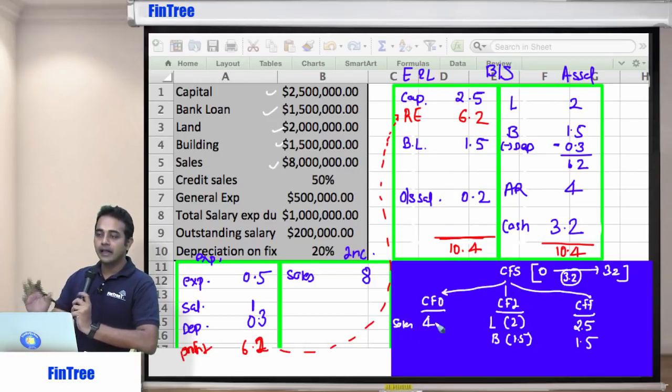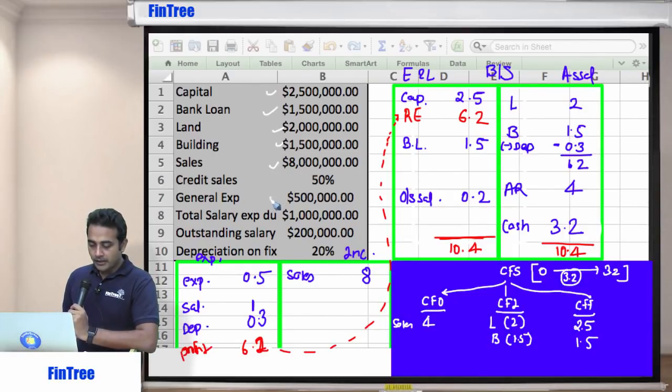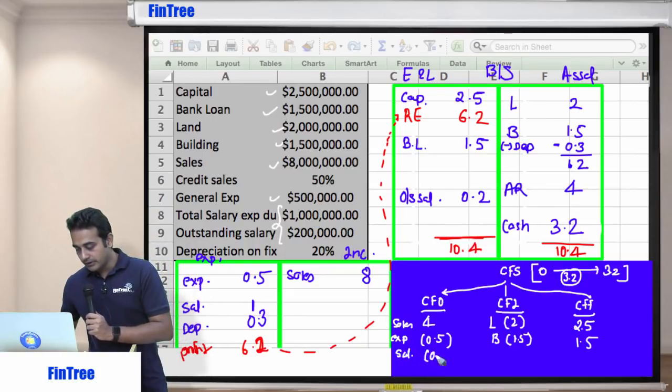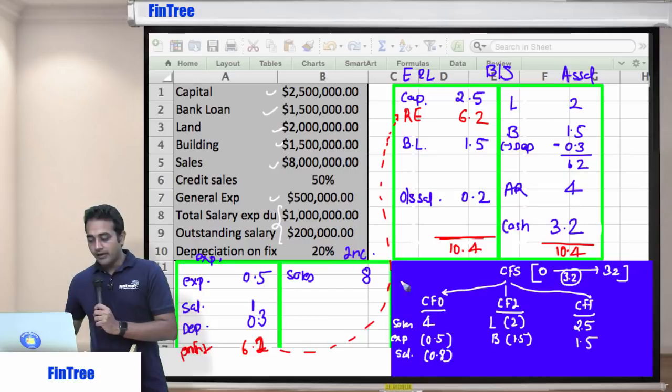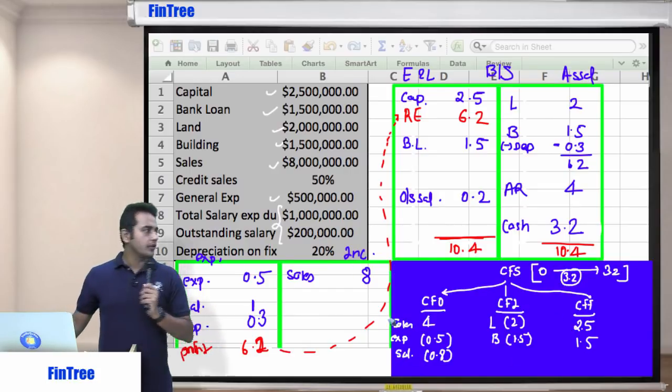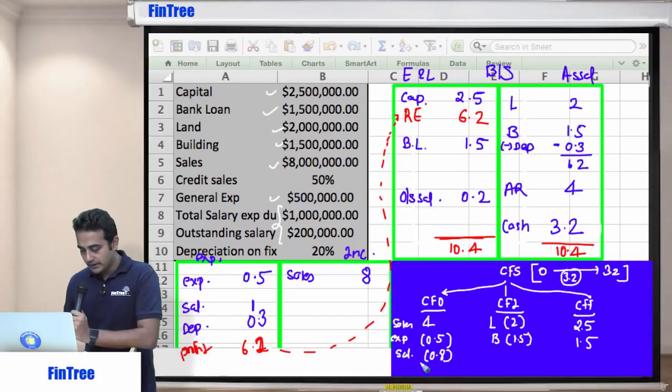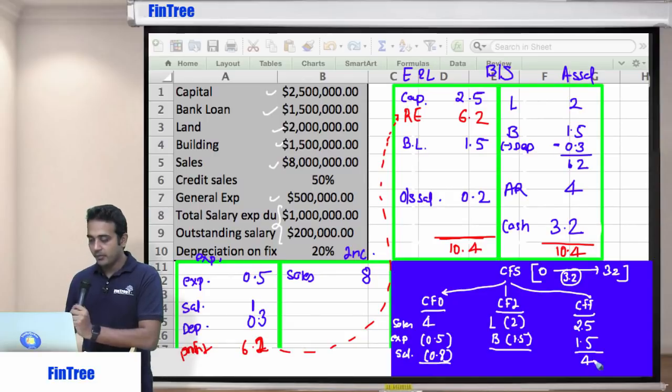Then general expenses 0.5. Where should we write this? It is an operations, but it's a negative item. So negative 0.5. Total salary is 1 million. But how much did we pay in cash? 0.8. So I'm just writing the cash component. That's 0.8. And where should I write depreciation? Nowhere because it's a non-cash expense. We do not pay out cash. So that's it. Your cash flow statement is done. So let's take a total of these three numbers.